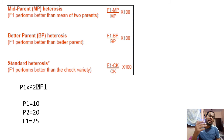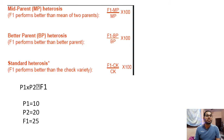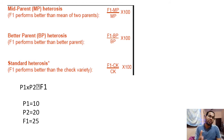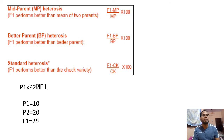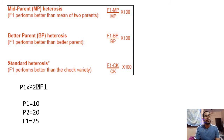Heterosis is of 3 types. Mainly there are 3 types: one is Mid-parent Heterosis, second is Better Parent Heterosis, and third is Standard Parent Heterosis. Mid-parent Heterosis means the F1 performance is better than both parents. The formula is: F1 minus Mid-parent, divided by Mid-parent, and to calculate in percentage you multiply by 100. Here F1 and Mid-parent refer to the mean of F1 and the mean of the mid-parent.